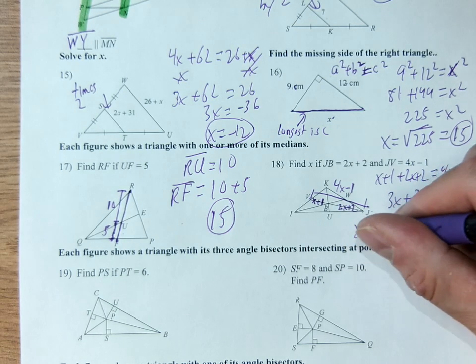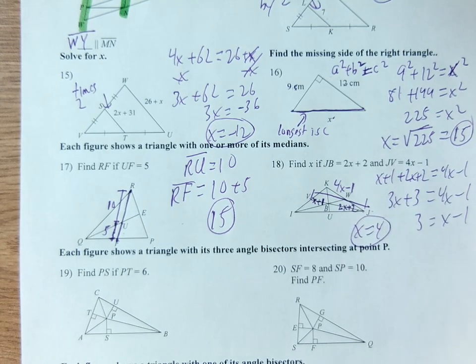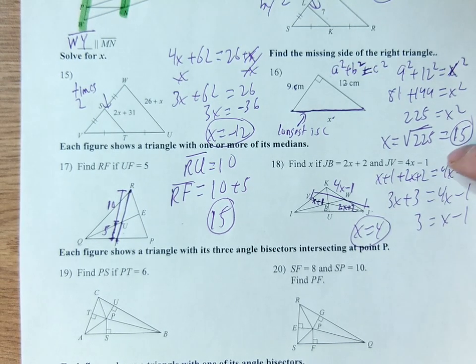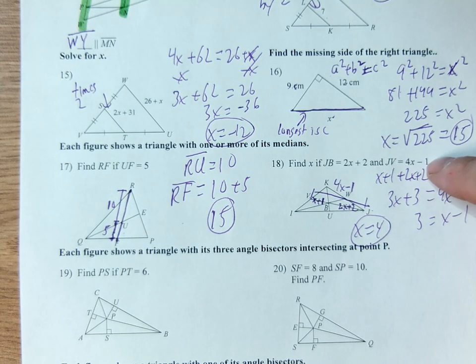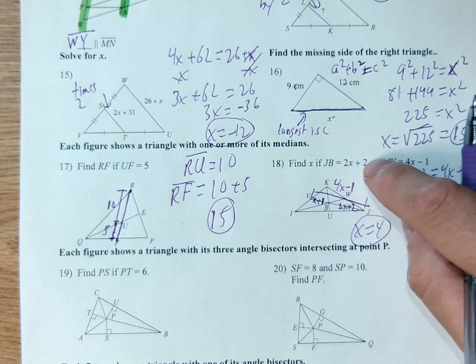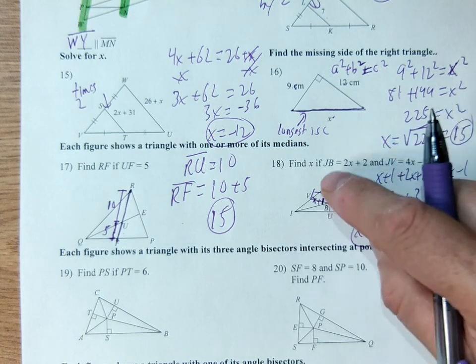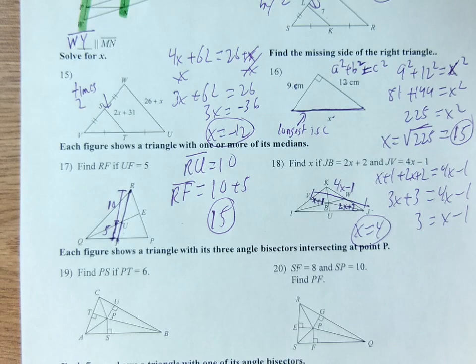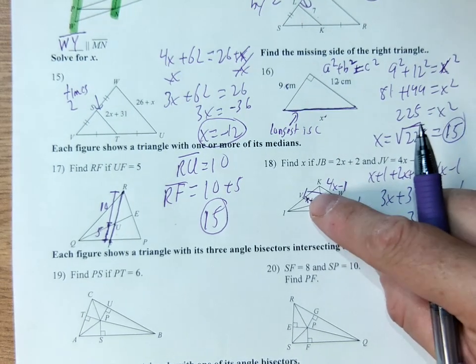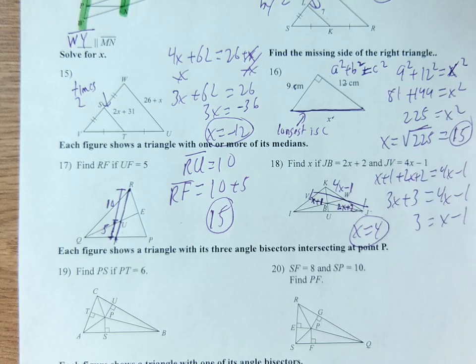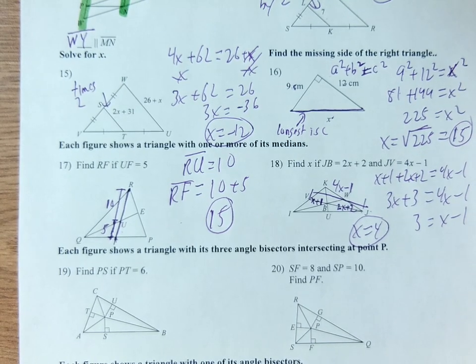And then these two lengths together add up to be that length. So x plus 1 plus 2x plus 2 equals 4x minus 1. Then I can solve this for x. Combine my terms on the left. 3x plus 3 equals 4x minus 1. 3 from 4x is x. 1 plus 3 is 4. X is 4. You can check your work. 16 minus 1 is 15. 8 plus 2 is 10. 10 plus 5 is, in fact, 15.